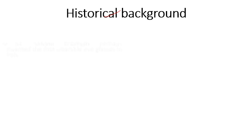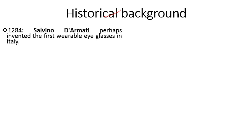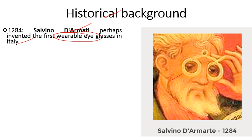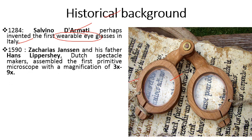Next is the historical background of microscopy. In 1284, Salvino d'Armati is perhaps the first person who invented wearable eyeglasses in Italy. Then in 1590, Zacharias Janssen and his father Hans Lippershey, Dutch spectacle makers, assembled the first primitive microscope with a magnification of 3x to 9x.